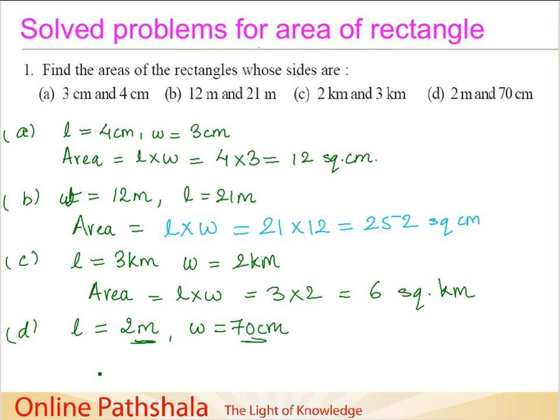Therefore, we can say that the area is L into W, or it is 200 multiplied by 70, which is 14,000 square meters. That is because 100 centimeters equals 1 meter.